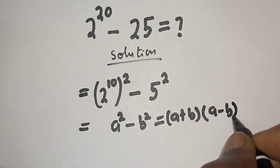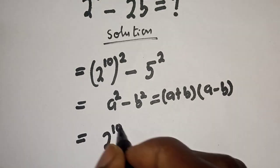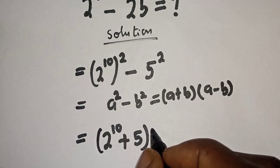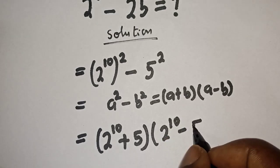Then this is 2 raised to power 10 plus 5 bracket 2 raised to power 10 minus 5.